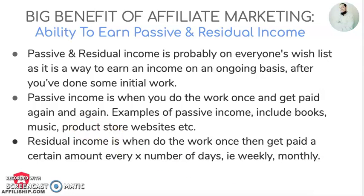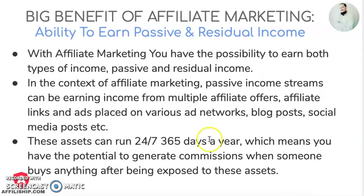When it comes to affiliate marketing, you have the possibility to earn both types of income — passive and residual. Passive income streams can be, for example, income from multiple affiliate offers. When you're promoting multiple affiliate offers, affiliate links and ads placed on various ad networks, affiliate links placed on blog posts, social media posts, and so on. These assets can run for you 24/7 and 365 days a year because they're on the internet, which means you have the potential to generate commissions when someone buys after being exposed to these ads, assets, and blog posts.